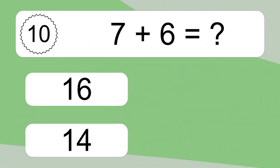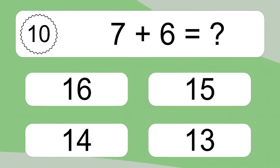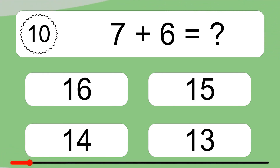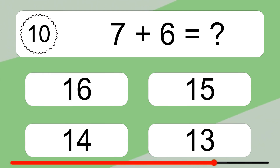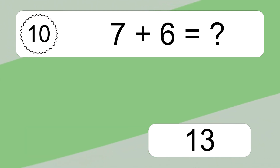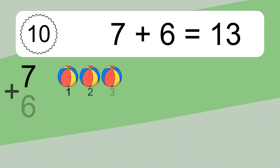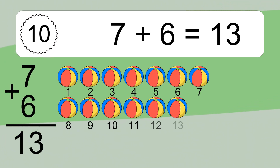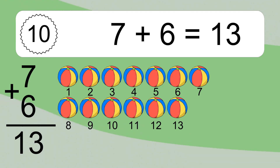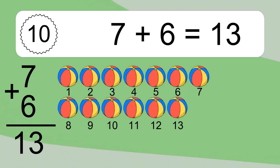Seven plus six equals what? Seven plus six equals thirteen. Let's count it: one, two, three, four, five, six, seven, eight, nine, ten, eleven, twelve, thirteen.